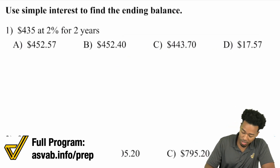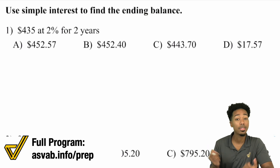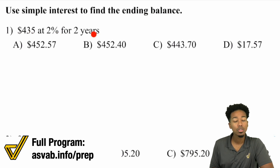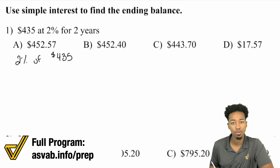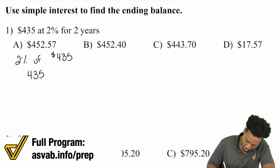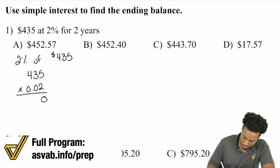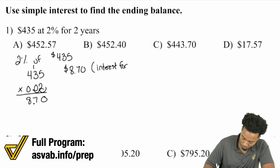So now what we'll do is show you what it means for simple interest. Here it says we want to find the ending balance. We're going to find the interest, add it back to the original amount, and then we're done. Here it says $435 was invested at 2% interest for two years. This means that you're going to find 2% of the $435. Once you find that, that's going to be the interest you earn after one year. 435 times 0.02 equals $8.70. That's interest for one year.